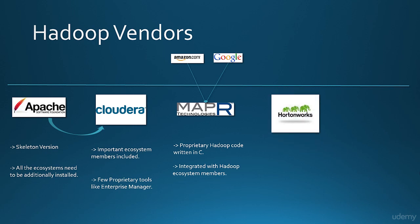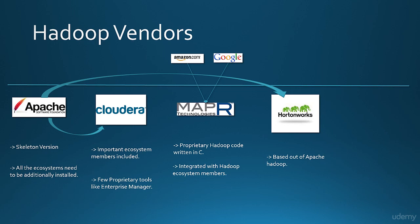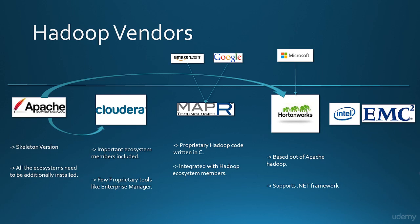Hortonworks is the latest entry in the Hadoop vendors. It is a division that has spawned out from Yahoo and uses Apache Hadoop as its core platform for its distribution, making it another flavor of Apache Hadoop. In October 2011, Hortonworks announced it would collaborate with Microsoft for Hadoop distributions, working on integration of the .NET framework with Hadoop. There is also news that hardware giants Intel and EMC are going to launch their own versions of Hadoop, signifying that in future most hardware would be used in Hadoop clusters.